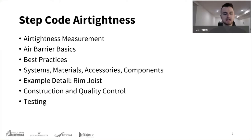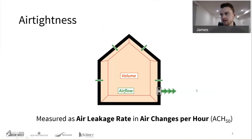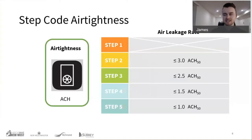In the context of a Part 9 building, we're dealing with a measurement known as ACH — air changes per hour. It's essentially a measurement of the volume of air that moves through the building during the test at a test pressure of 50 pascals — ACH50. Similar to golf, the lower the score the better. With the step code we have descending levels of air tightness: step 2, 3, 4, 5 — and hitting these targets plays a huge role in hitting the energy targets for each step.